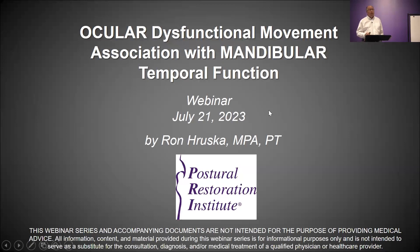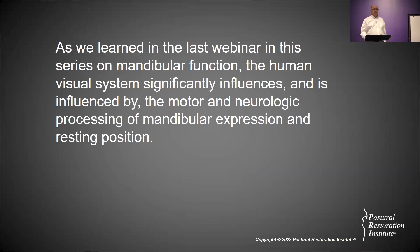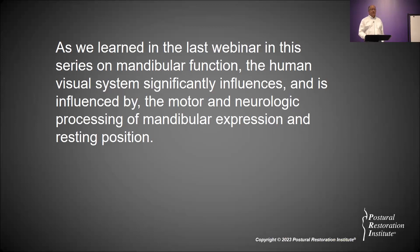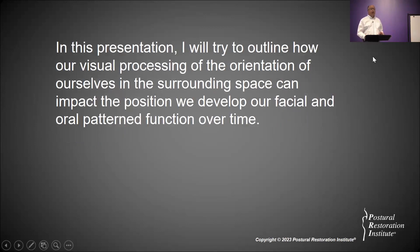As we learned in the last webinar, in this series on mandibular function, the human visual system significantly influences and is influenced by the motor and neurologic processing of mandibular expression and resting position. I feel strongly that there isn't a more significant bone in our body for expression, rest, neurological input processing, and the output we give both to others and ourselves through the use of our mandible. In this presentation I'll outline how our visual processing of orientation and surrounding space impacts our facial and oral pattern function, especially over time.